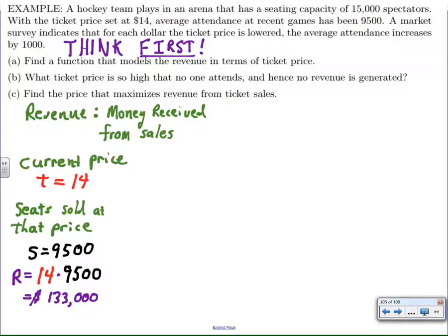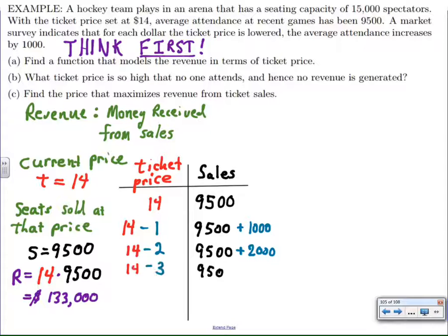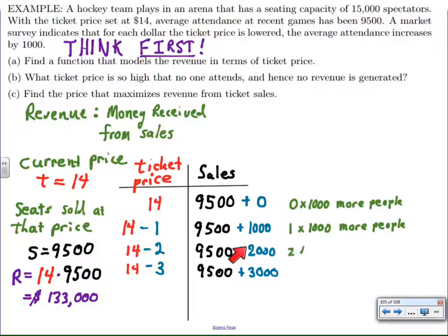I'm trying to understand what happens here. If I lower the price, I get 1,000 more people. I'm going to organize my information in a table. I have the ticket price as the independent variable. I know I have $14, 9,500 people. If I charge $13, I'm going to get 1,000 more people. If I charge $12, I'm going to get 1,000 more people than that. And so on. This enables me to recognize that for every dollar down, I'm going to add 1,000 more. $2 lower gives me 2,000 more people. $3 lower, 3,000 more people.